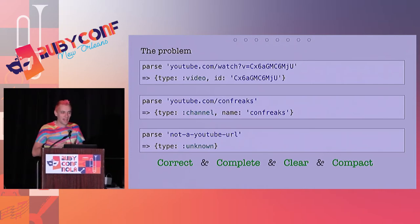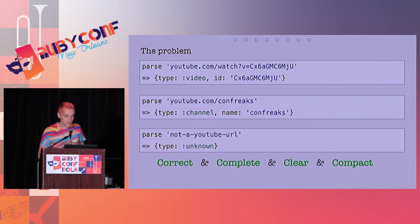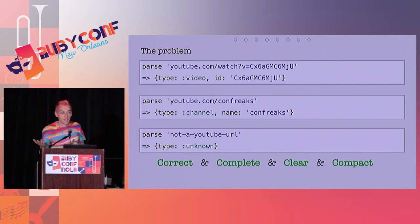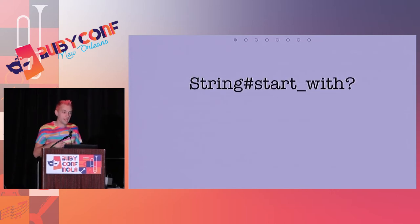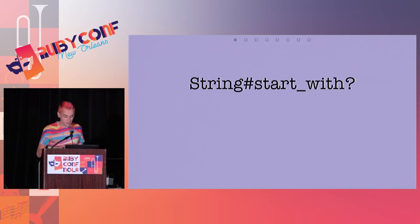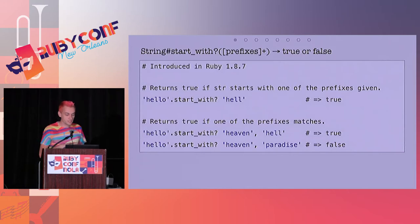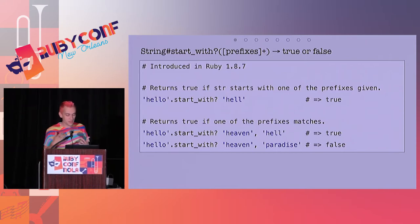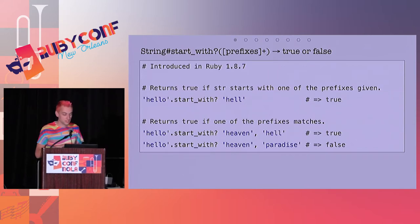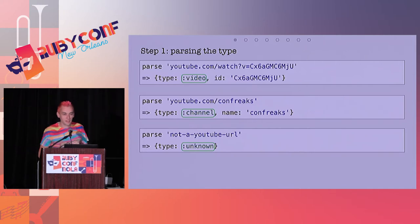Let's start, and I'm going to give it a first pass. What I can observe is that those URLs start in different ways. The first one starts with `youtube.com/watch`, and I can imagine that's a video. The second one starts with `youtube.com/` and I can imagine that's a channel. The last one doesn't even have YouTube, so maybe unknown. My first attempt is going to be to use the method `start_with?` from String. Straight from the documentation: `start_with?` returns true if the string starts with one of the prefixes given. So `"hello".start_with?("hell")` is true, and `"hello".start_with?("heaven", "hell")` is also true because one of the prefixes matches.